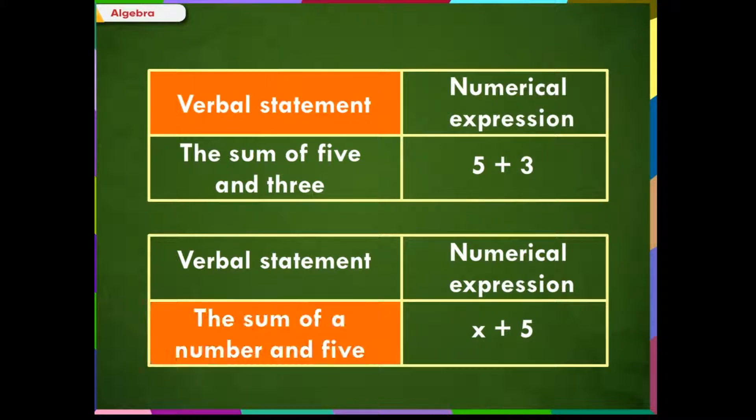Since this number is unknown, we express this unknown number by a variable x, and thus write x plus 5. This is an algebraic expression as it consists of a variable. Now let us transform this verbal statement.